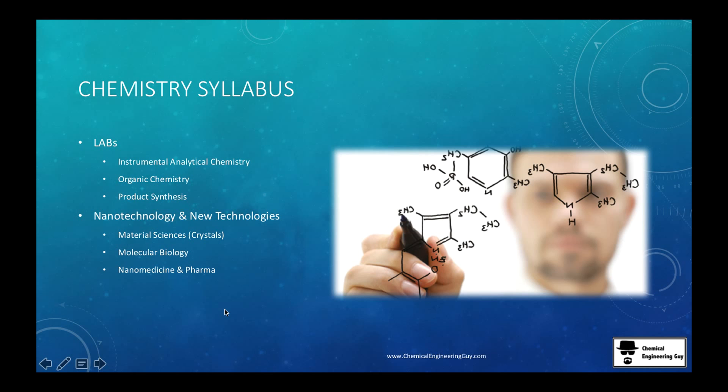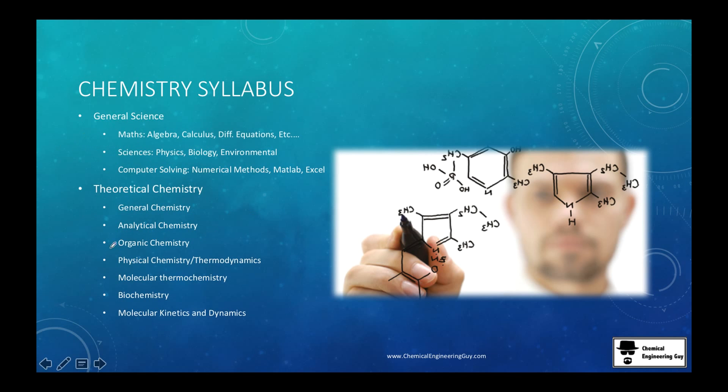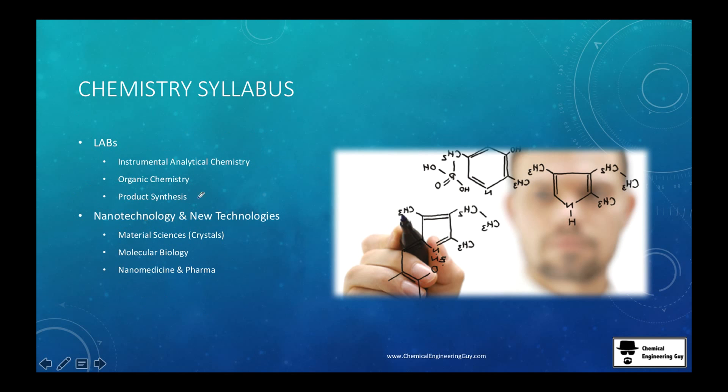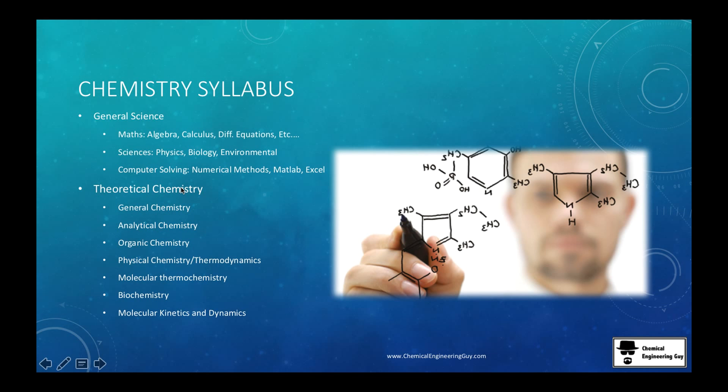And once you got all that, you are going to probably check out some of the experiments because one thing is the theory - theoretical concepts - but eventually you want to do some practical work. So you're going to have instrumental analytical chemistry, organic chemistry lab, product synthesis, general chemistry lab, analytical chemistry - very probably most likely you're going to have one lab at least per each of these classes.